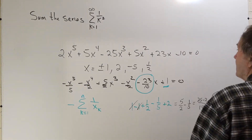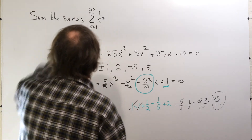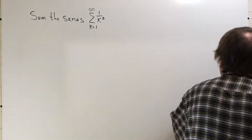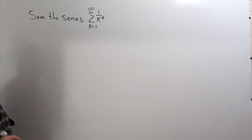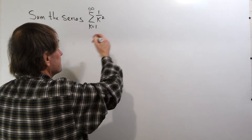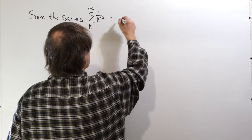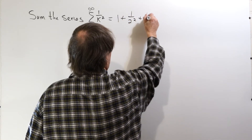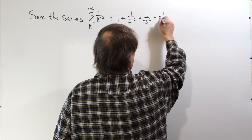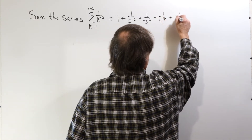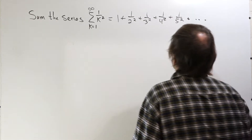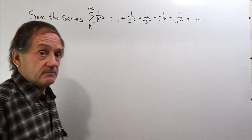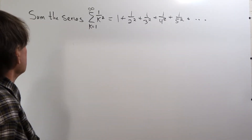Now we're going to use that fact — Euler actually used that fact in summing this series. Let's look at some of the terms of this particular series. It's 1 plus one over 2 squared, plus one over 3 squared, plus one over 4 squared, plus one over 5 squared, and so on. It is the sum of the reciprocals of the squares of the integers.